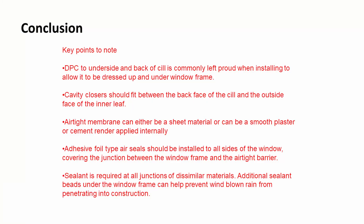In conclusion, there are some key points to note. The DPC to the underside and back of the sill is commonly left proud when installing, to allow it to be dressed up and underneath the window frame for a tight seal. Cavity closers should fit between the back face of the sill and the outer face of the inner leaf. An airtight membrane — either a sheet material or smooth plaster such as a parge coat or cement render — is applied internally. Adhesive foil tape is used to seal around the windows to ensure that junction is perfectly airtight. Sealant is needed at all junctions of dissimilar materials, and additional sealant beads under the window frame can help prevent windblown rain from penetrating into the construction.